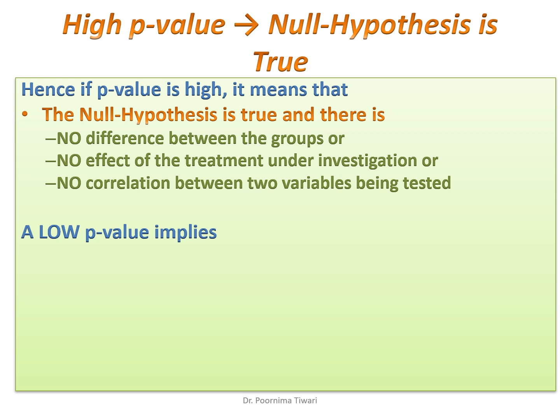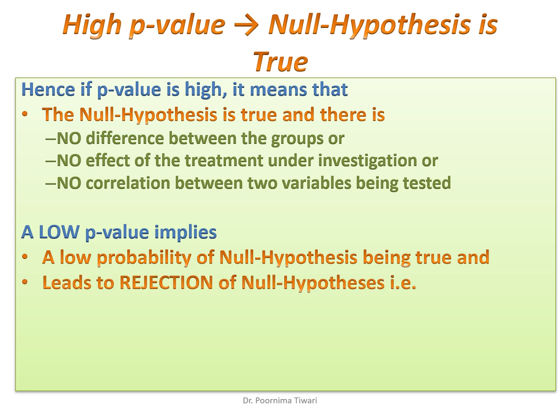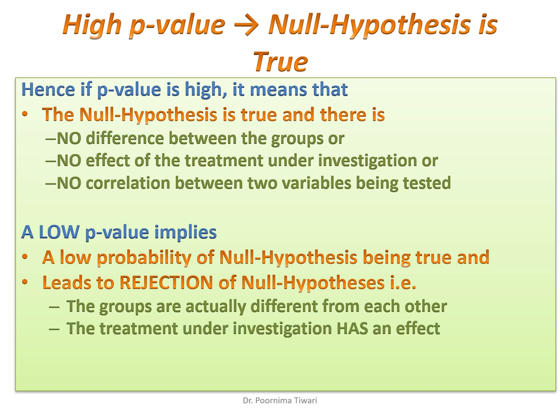On the other hand, if the p-value comes out to be too low, it means the probability of the null hypothesis being correct is too low, and hence we reject the null hypothesis. A low probability of the null hypothesis being true leads to its rejection — meaning the groups being compared are actually different from each other, or the treatment actually has an effect, or the variables in the study are interconnected.